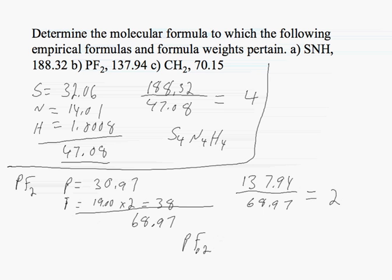Which means that we have to take our PF2 and multiply it by 2. So multiply the subscripts by 2, which means that we have P2F4. That would be the molecular formula for PF2.